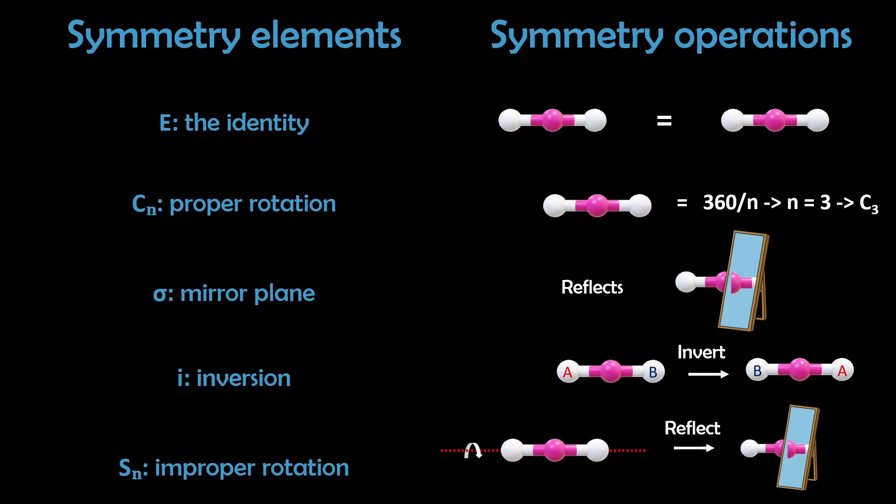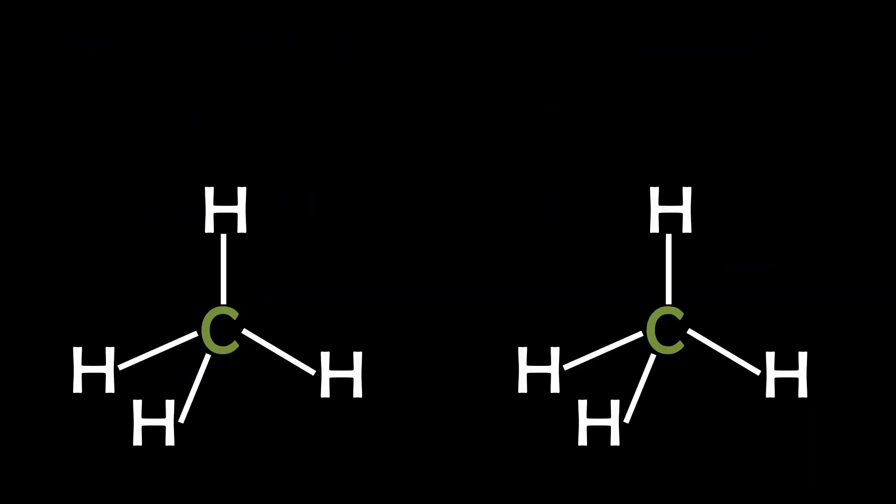An improper rotation rotates by 360 degrees divided by N, then reflects across a plane perpendicular to the rotation axis. Now to help us understand this better, let's quickly apply these to some real molecules.